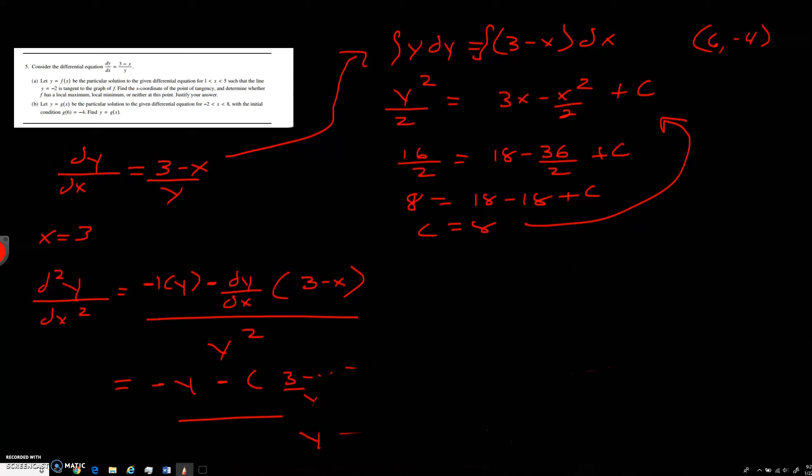So you're now going to get y squared over 2 equals 3x minus x squared over 2 plus 8.